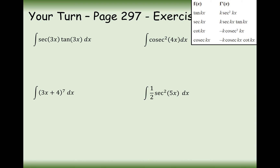For the first one, we've got a sec tan integral. The derivative of sec gives us sec tan, so it must be sec as the answer here. We're not going to multiply by 3 to the front — we divide by 3. So it's going to be a third sec(3x) plus c.